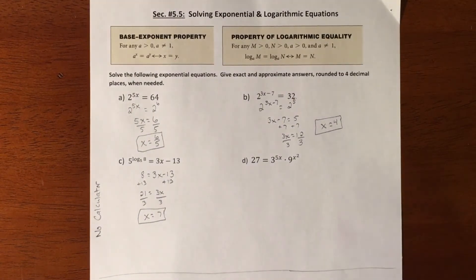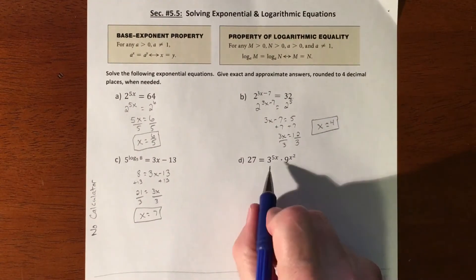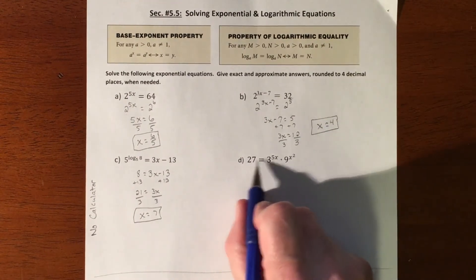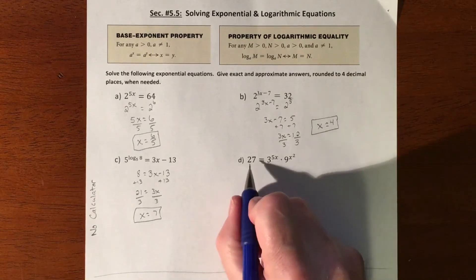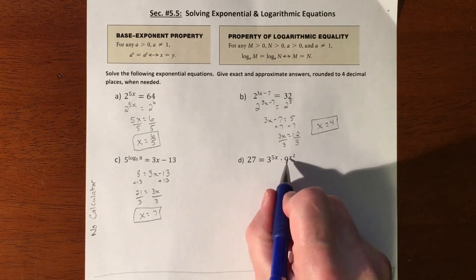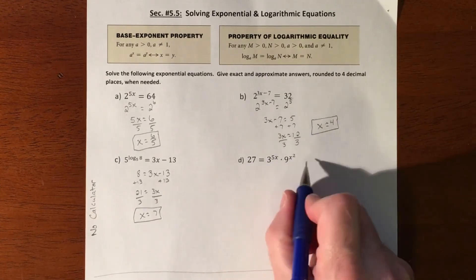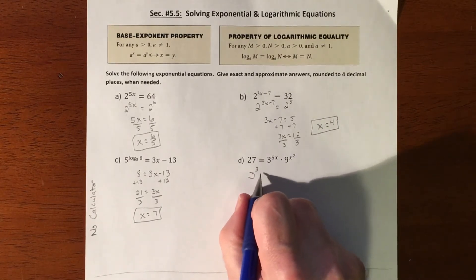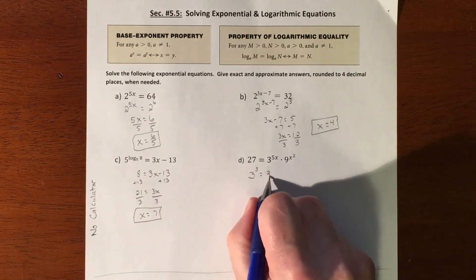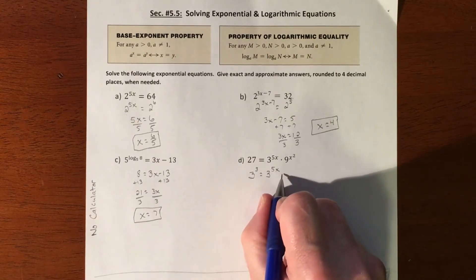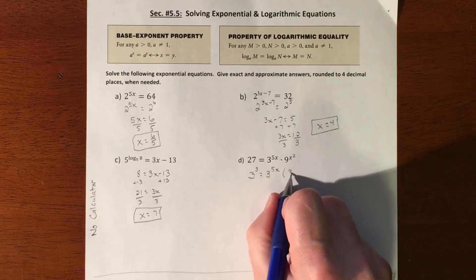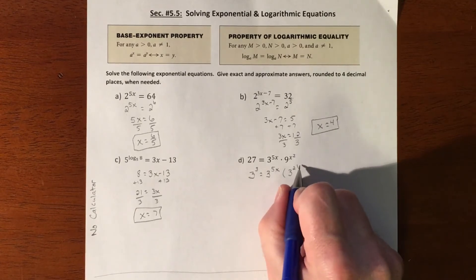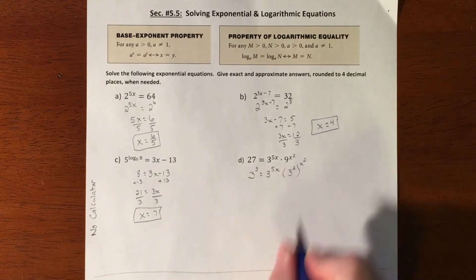All right, now this one's definitely harder looking, but all three of these have a 3 in common. 27 is a bunch of 3s, 9 is a bunch of 3s, so we're just going to rewrite everything as a bunch of 3s. So 27 is 3 to the third. We're not going to do anything to this one, and then 9 is 3 squared, but we already had a power here to it.